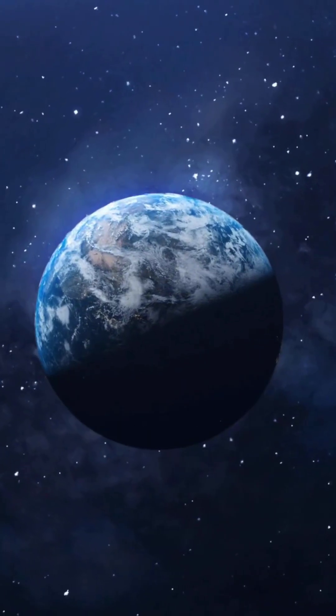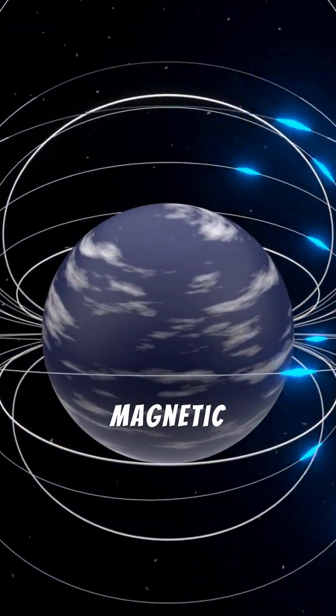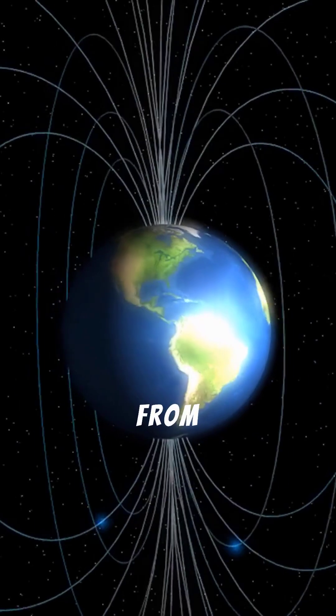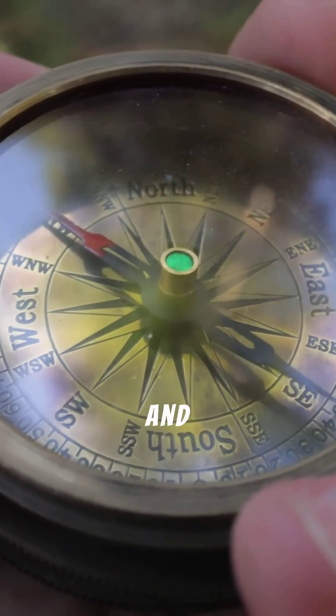And there's more. When the core changes how it spins, it can mess with Earth's magnetic field. That's the invisible shield that protects us from dangerous radiation from the sun, and it also helps GPS and compasses work.